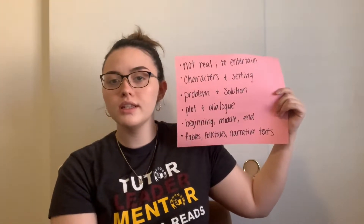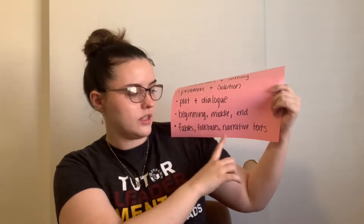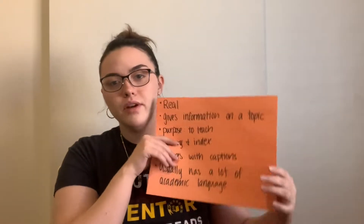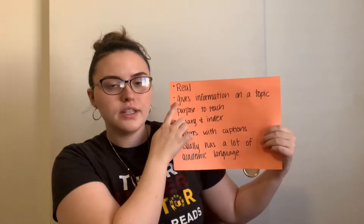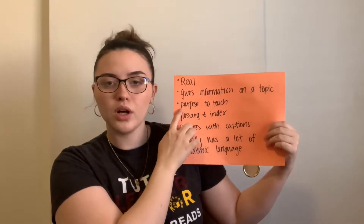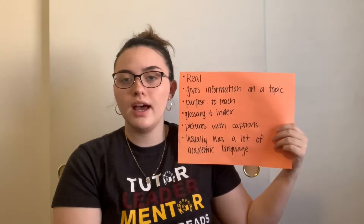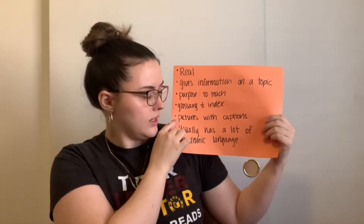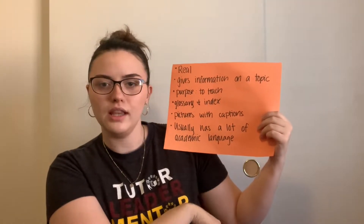Books and texts that tell us stories come in the form of fables, folktales, narrative texts, and more. Informational books, on the other hand, are very much real. They are based on facts. These kinds of books give us information on a topic. Their purpose is to teach us, whereas books that tell stories have the purpose of entertaining us. Books like this usually contain pictures with captions and a lot of academic language.